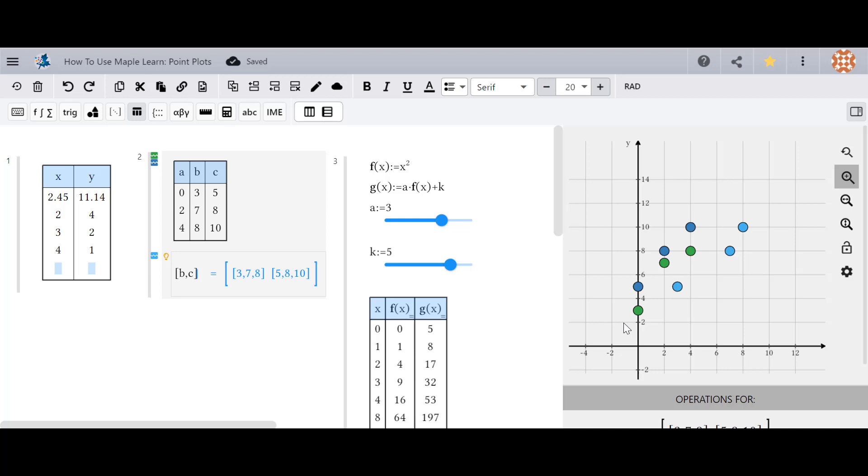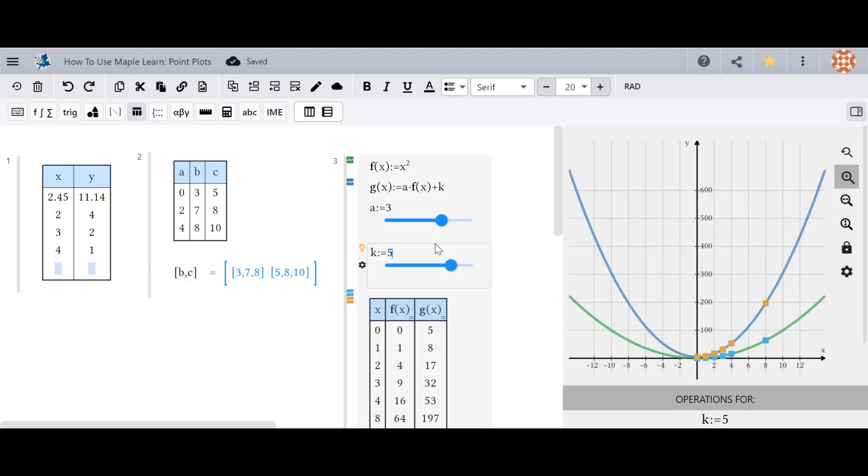Finally, you can use table and point plots to perform operations. For example, you can evaluate specific functions at specific inputs and highlight these points on the plot by calling the function within the table.